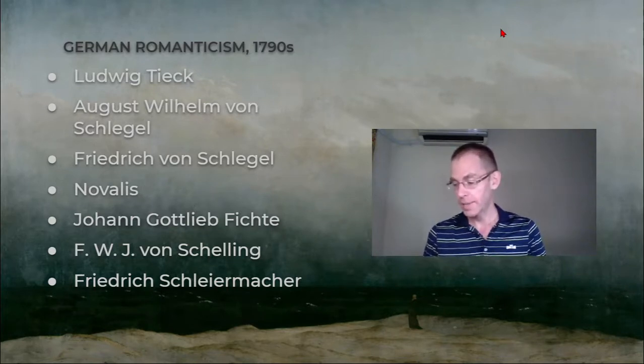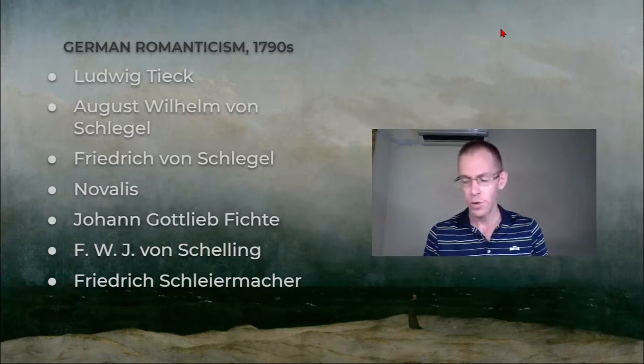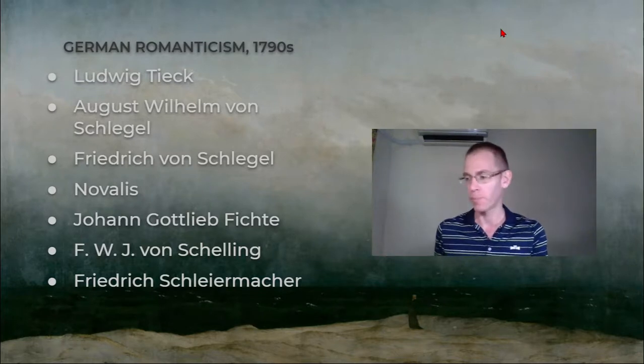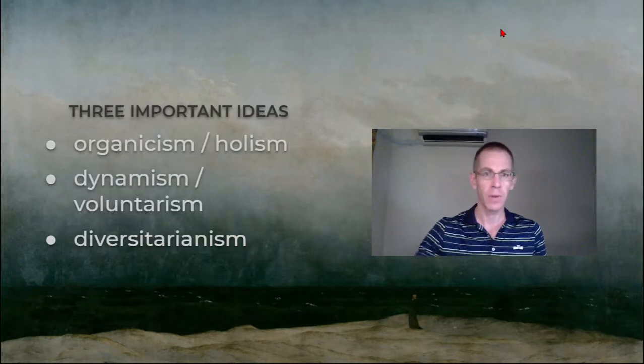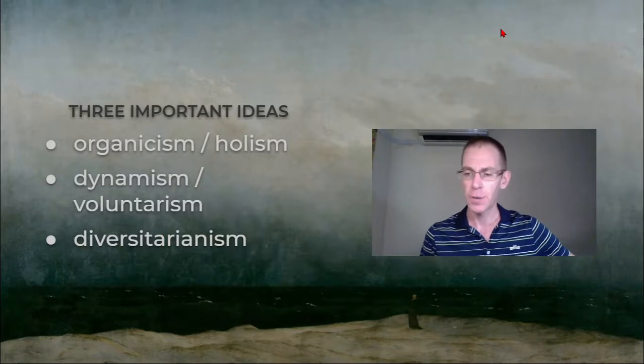So these were the main people at that time. There were others as well. In his 1941 essay 'On the Meaning of Romanticism,' the later essay from 1941, Lovejoy analyzes three ideas of this group of writers that were especially new, important, and influential.